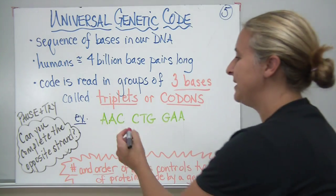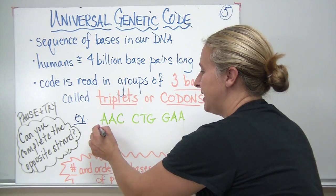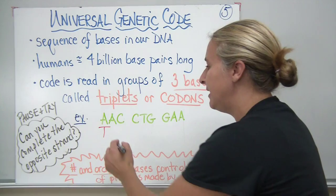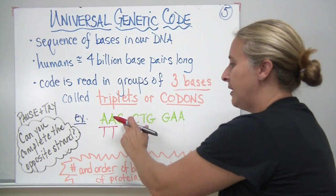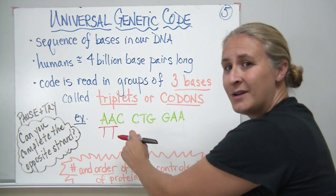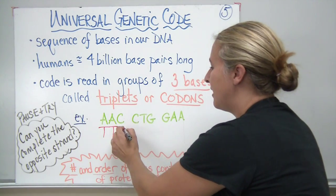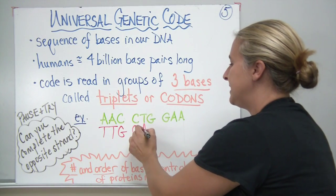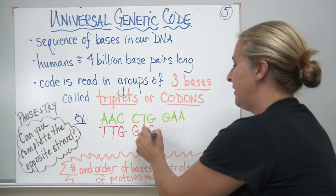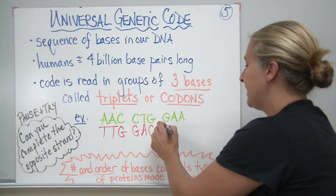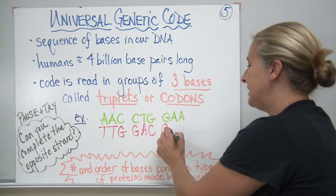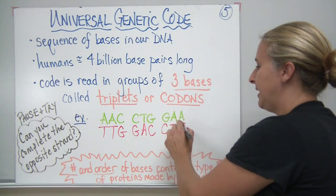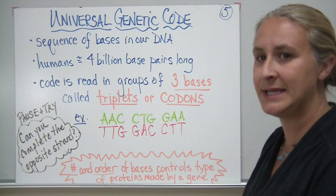Alright, let's see how we did. If we had an A on one strand, that would complement with a T. My C on one strand would complement with a G, and a G again. T with an A, a G with a C, a G with a C again, A with a T, and A with a T.